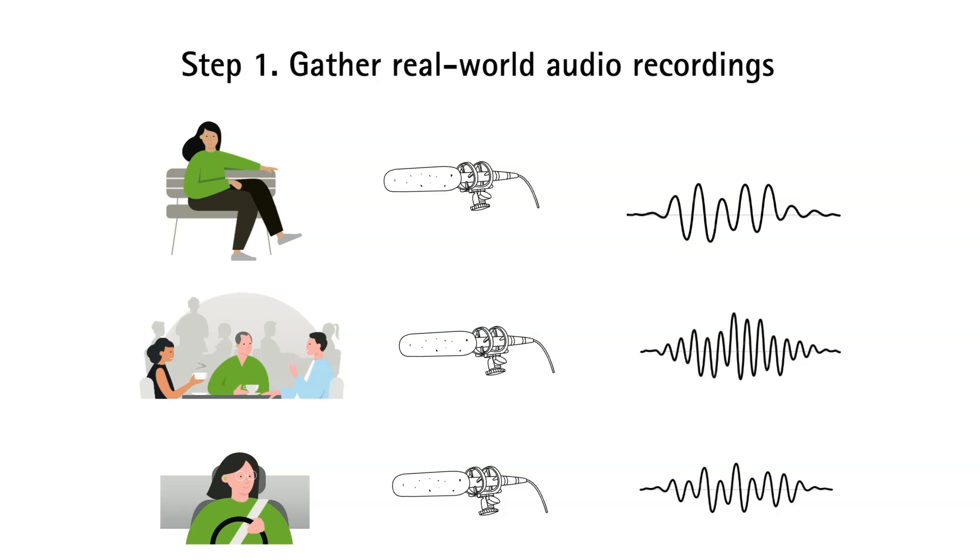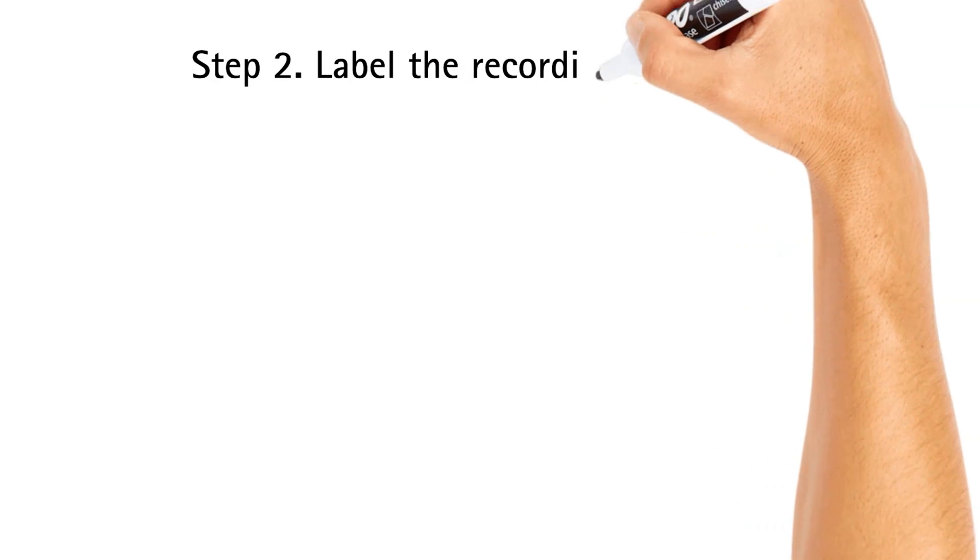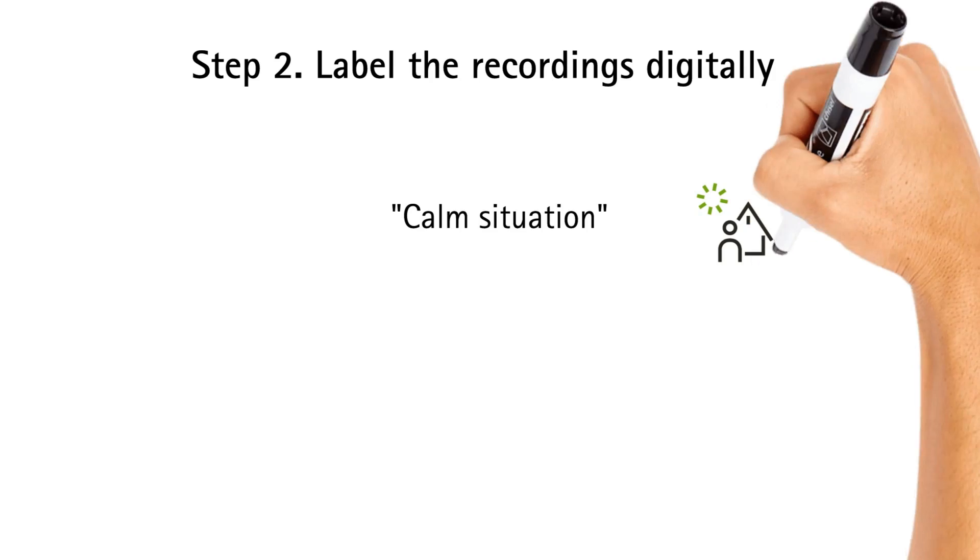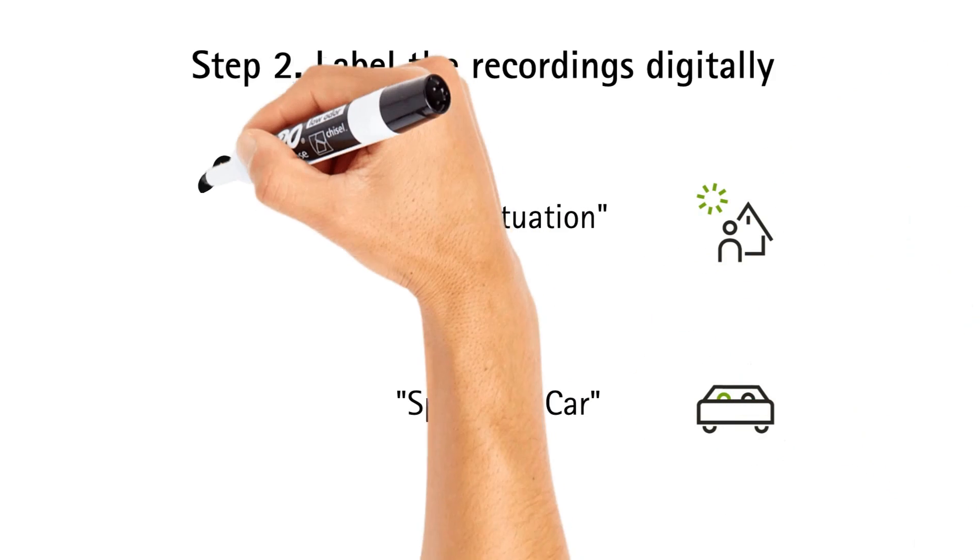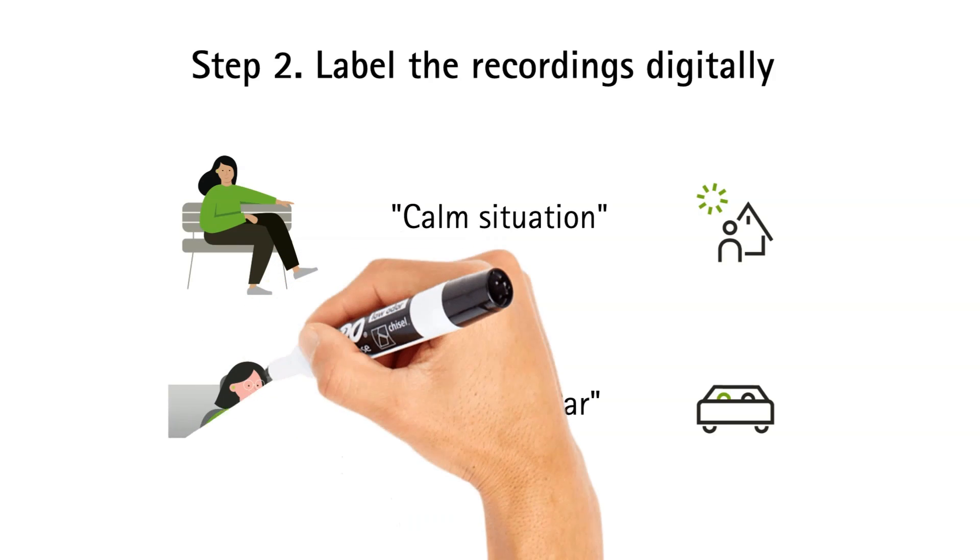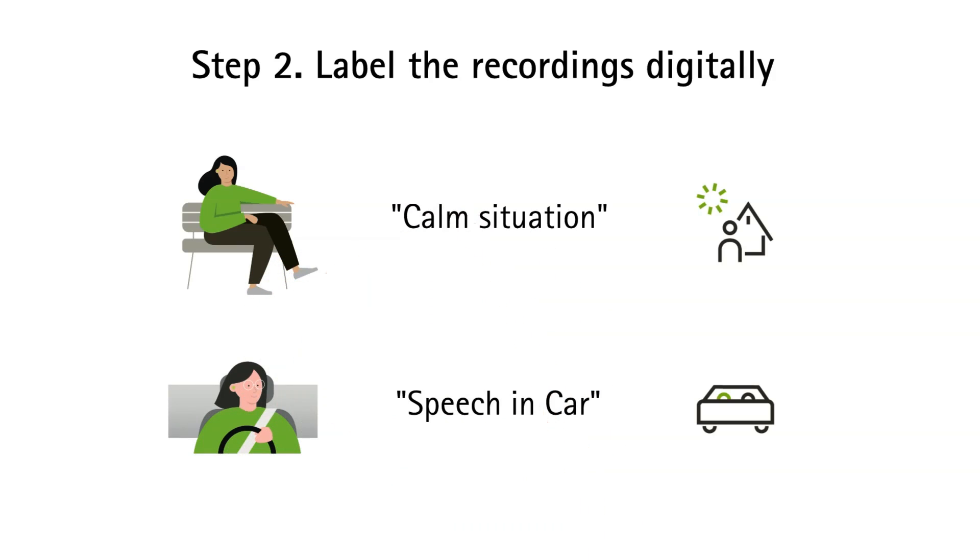Step 2 entails labeling these recordings in a methodical and logical way. These labels serve as vital cues to assist the algorithm's learning process, enabling it to discern key features within the audio recordings and associate them with the appropriate environment.